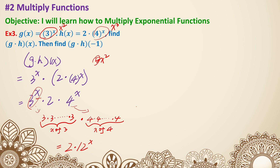That's how we multiply exponential functions: if both terms have the same exponent, we multiply the bases — 3 times 4 gives 12. If a number doesn't have an exponent, that's the coefficient and we keep it in front. Now plugging in: g times h of negative 1 is 2 times 12 to the negative 1 power, which is 2 times 1 over 12, giving 2 over 12, which simplifies to 1 over 6. There you go.